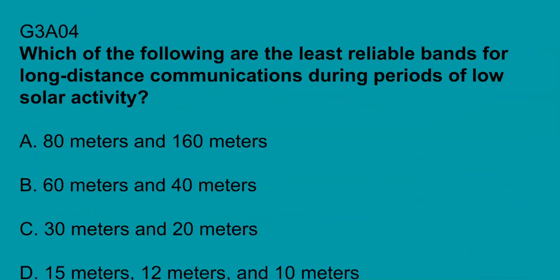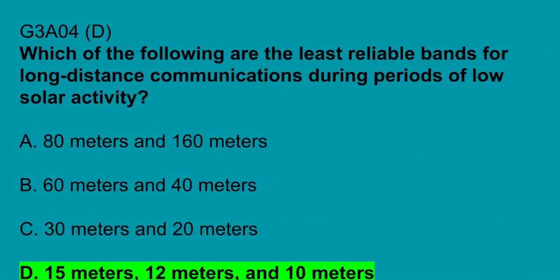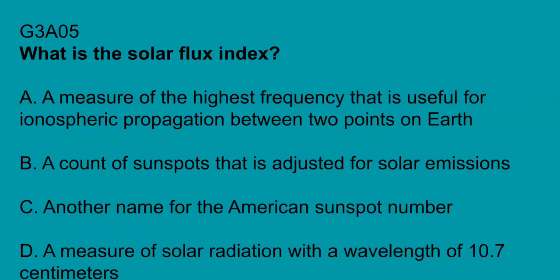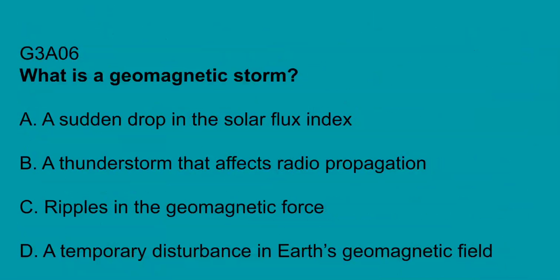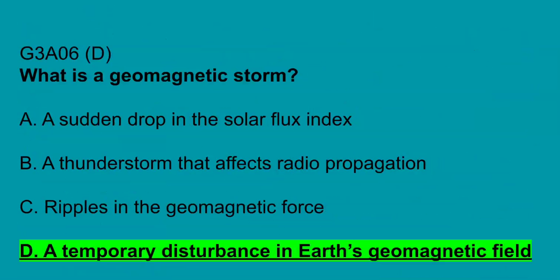G3A04: which of the following are the least reliable bands for long-distance communications during periods of low solar activity? It's going to be 15, 20, and 10 meters. G3A05: what is the solar flux index? A measure of solar radiation with a wavelength of 10.7 centimeters. G3A06: what is a geomagnetic storm? A temporary disturbance in the Earth's geomagnetic field.